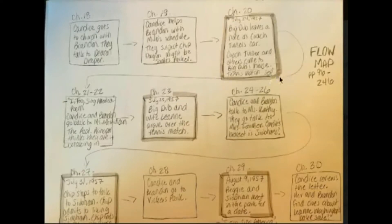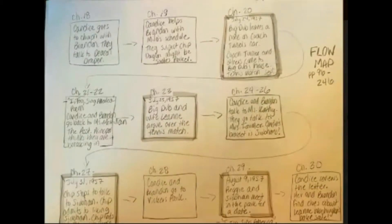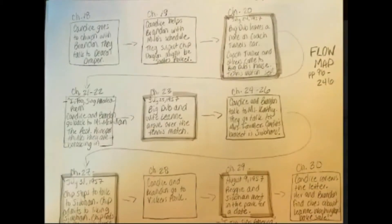For the historical chapters, I outlined them in gray so you can see we're jumping back into the past. In chapter 20, we jump all the way back — Big Dub leaves a note on Coach Turner's car. Big Dub is Siobhan's dad, and he leaves a note on Coach Turner, the high school tennis coach at Wallace High, on his car. Coach Turner and the others come to Big Dub's house and the match is set.